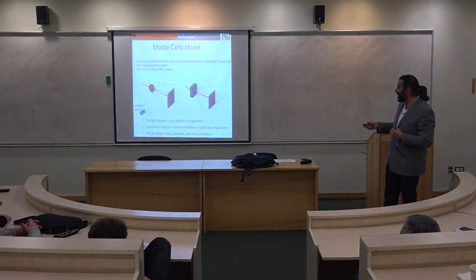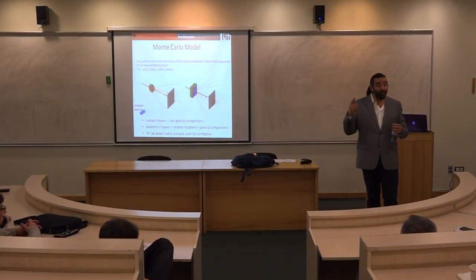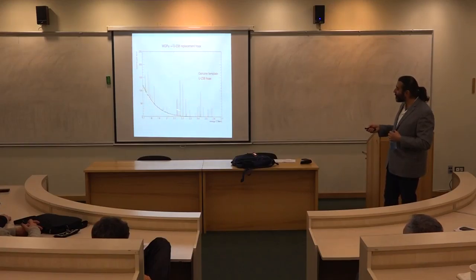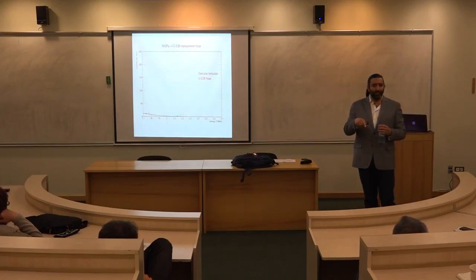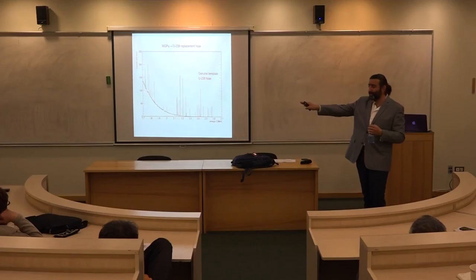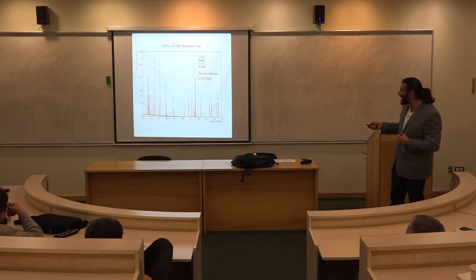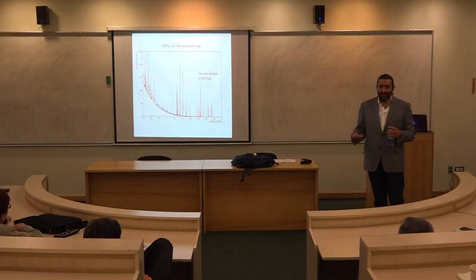We did simulations of different geometries, taking the original weapon, changing a different part, and asking: does our signal change enough for us to see it? And how long do we have to measure to see it? This is the actual simulated spectrum from a genuine template. The red one is the signal from a warhead where we replaced the plutonium — which is very valuable — with uranium-238, which you can almost buy freely. The question was: will the spectra be different enough for us to tell the difference?